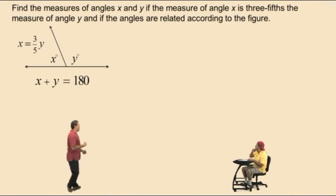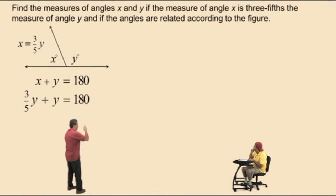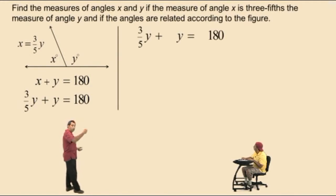Now, we can substitute the x with 3 fifths y to give us this equation. Now, we can solve this equation using a clearing fractions approach, which means we're going to use the denominator 5 to clear our fractions by multiplying both sides of our equation and distributing the 5 to get this equation right here.